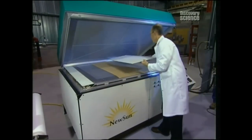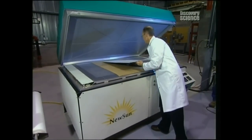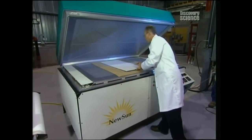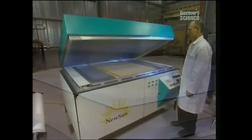To laminate and stiffen the solar panel, it's placed in a hermetically sealed, heated oven, with the air vacuumed out. The panel will cook at 80 degrees centigrade for 15 minutes.